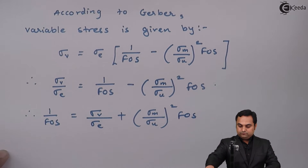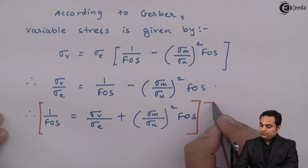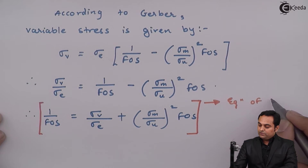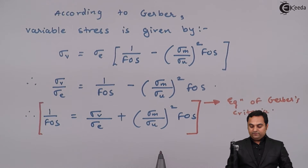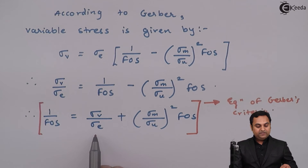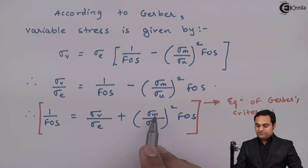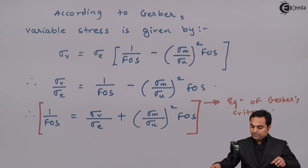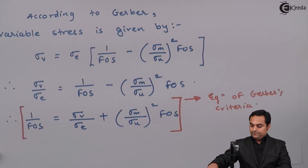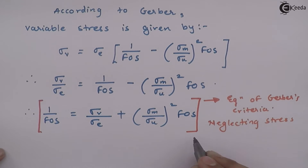This is the equation of Gerber's criteria, where Sigma V is variable stress, Sigma E is the endurance limit stress, Sigma M is mean stress, Sigma U is ultimate stress, and FOS is the factor of safety. This Gerber equation is written neglecting the stress concentration factor.